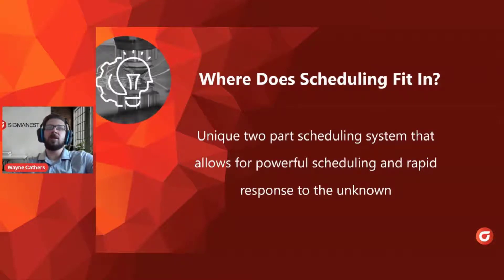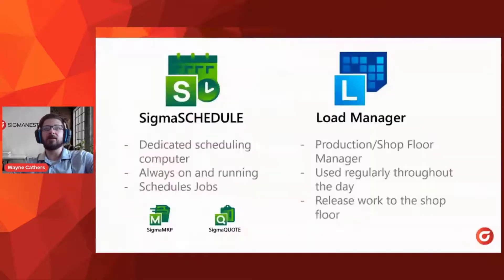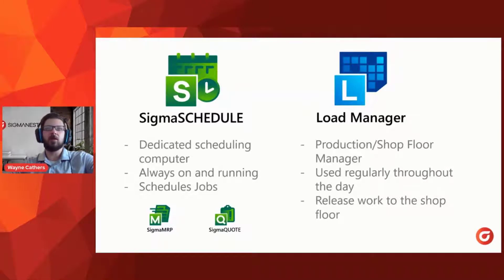At a high level, we have a unique two-part scheduling system that we've designed and created over the last couple of years. It allows us to have a powerful scheduling solution designed the way fabricators need it to work, while also allowing us to rapidly respond to different changes. The first application is Sigma Schedule — a standalone software you install on your server or a dedicated scheduling computer. It's a set-it-and-forget-it: you install it, turn it on, and let it run continuously. Anytime you create jobs in Sigma MRP or Sigma Quote, Sigma Schedule runs in the background to schedule those jobs.